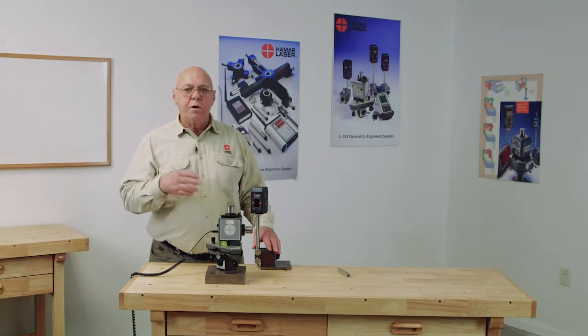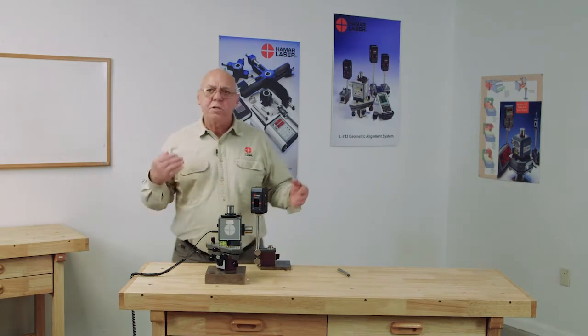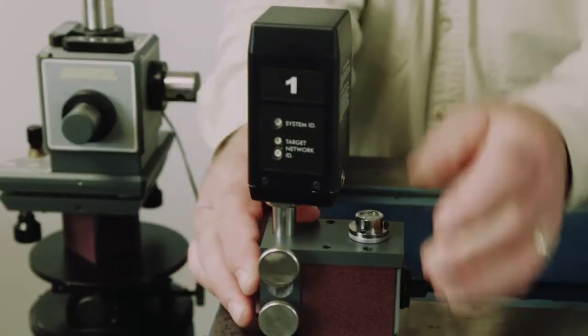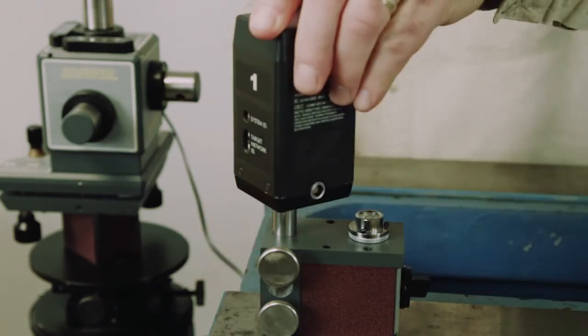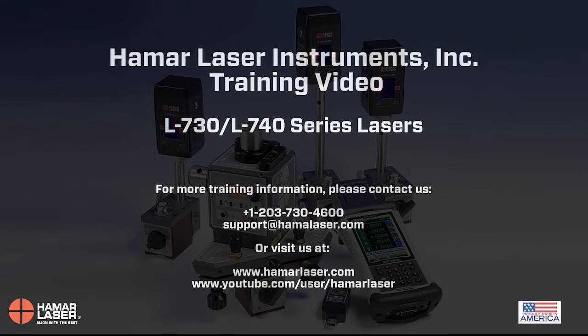Reflections. You may get a reflection off something back into the target. These are some of the things that you have to watch out for. So that is the basic operation of the A1519 targets and some of the things that you could run into. Thank you for watching.